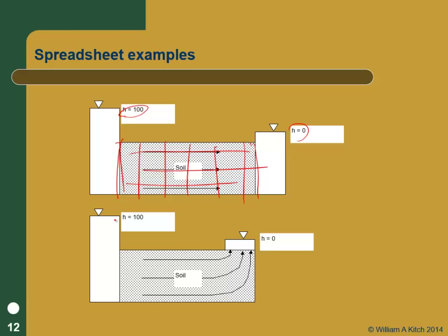Then I'm going to do a very simple two-dimensional one that's really a one-dimensional flow. I'm going to turn one side into a no-flow boundary, open up a hole on the top of the permeameter, let it flow up, and then we should get some kind of a flow net that looks like a spreading pattern. So those are the two problems we're going to do.